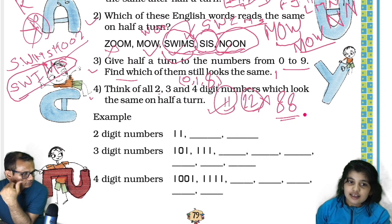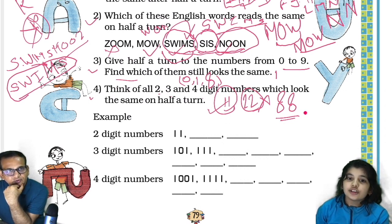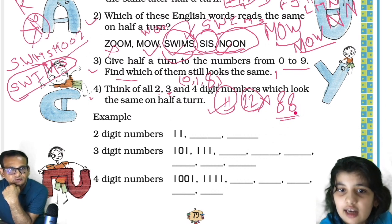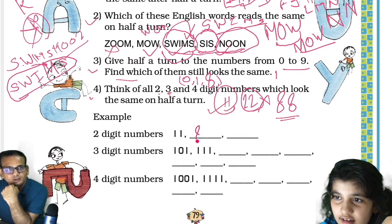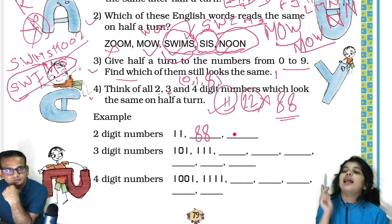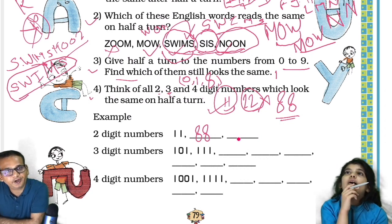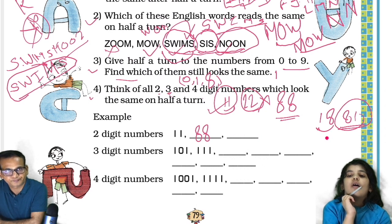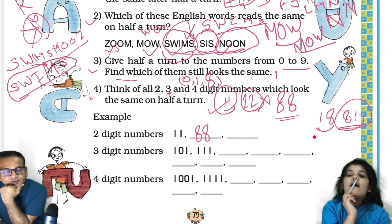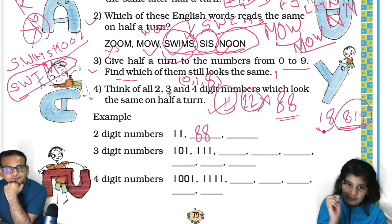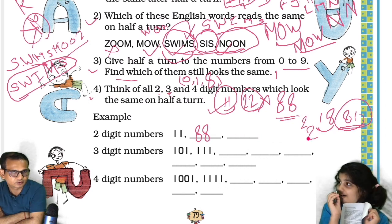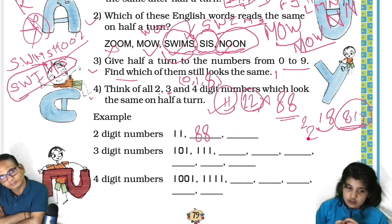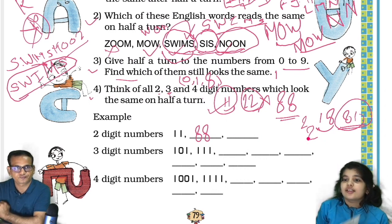That's all? There's one more — 69! If you turn 69 it will be 69 again. Let me check — yes, 69. Also 18 turned gives 81, 81 turned gives 18 — so those are not equal. Zero 80? No. Think fast — what other two digit numbers are there?